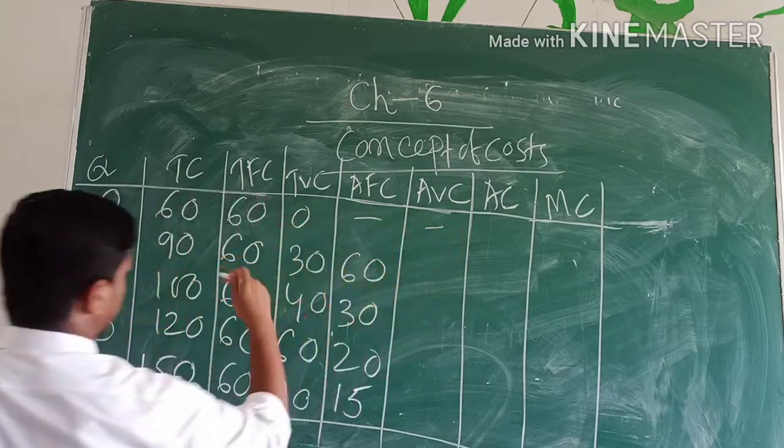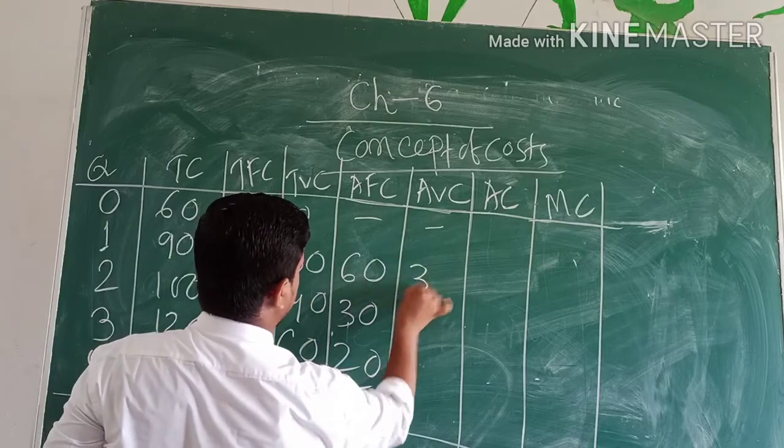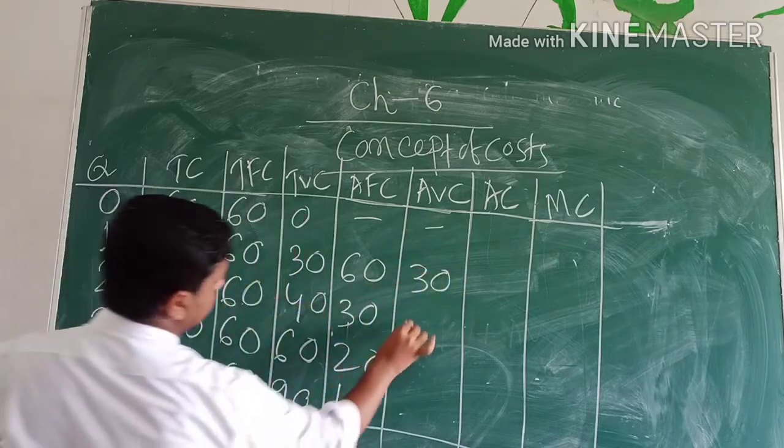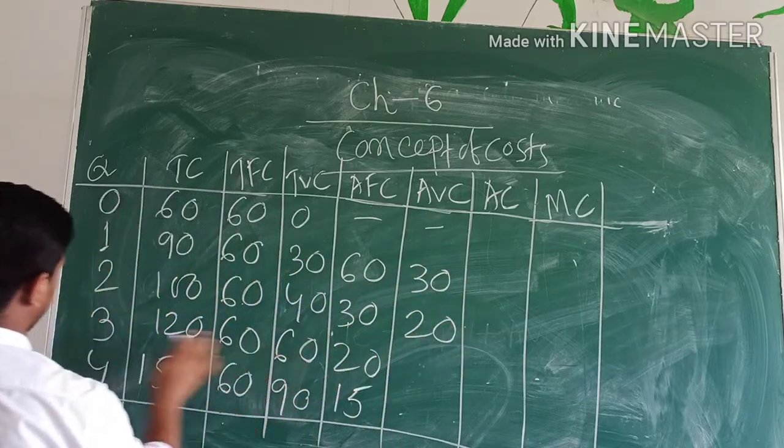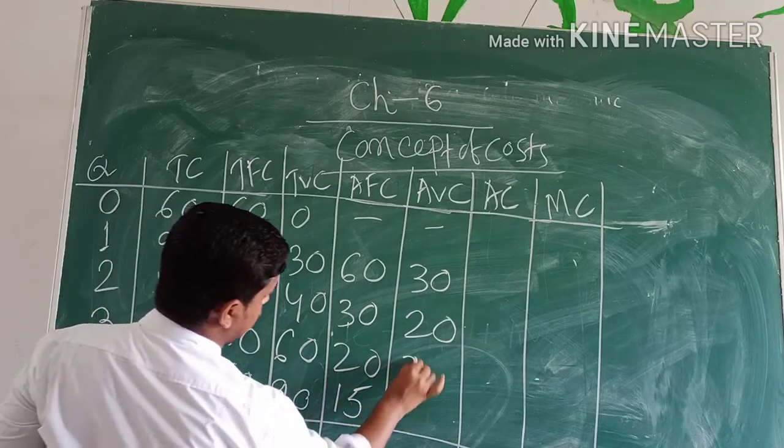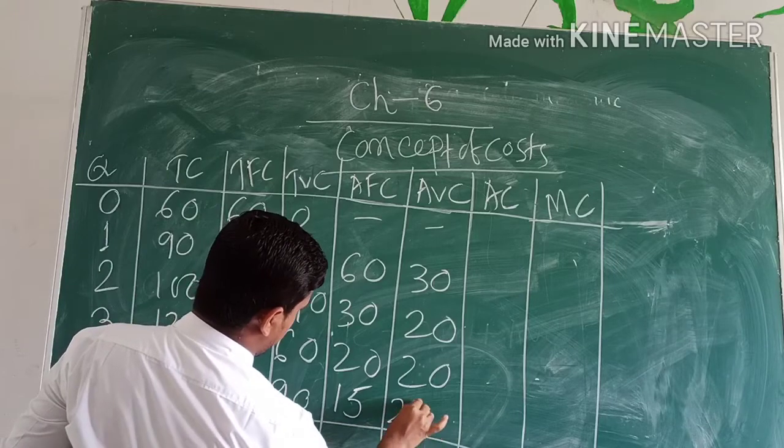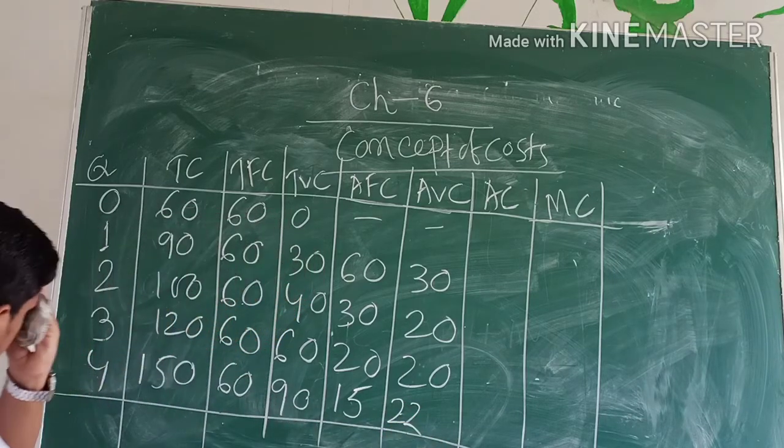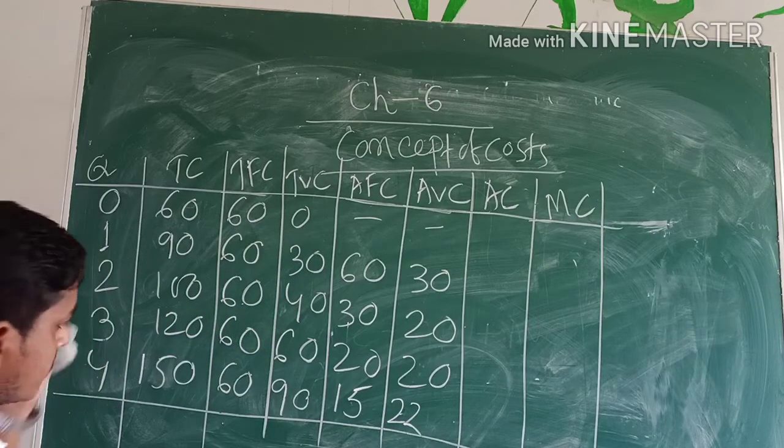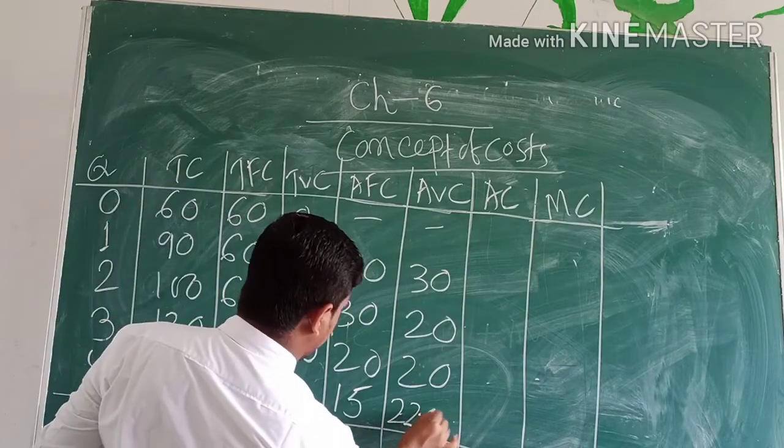Then AVC is TVC divided by Q. It will be undefined, then 30, then 40 divided by 2 is 20, 60 divided by 3 is 20, then 90 divided by 4 is 22.5.